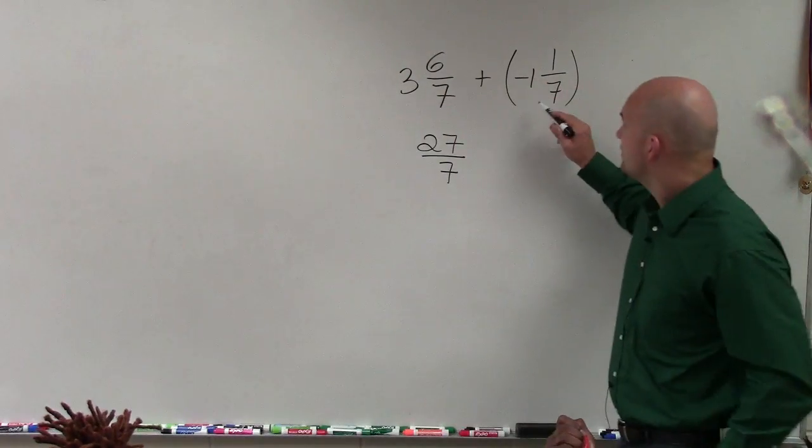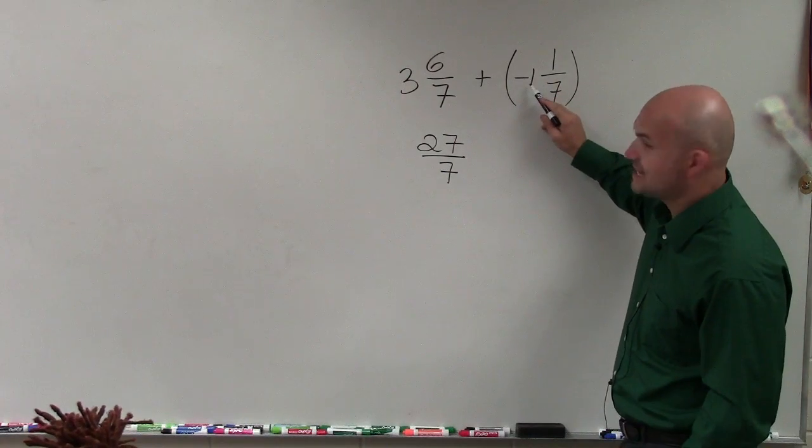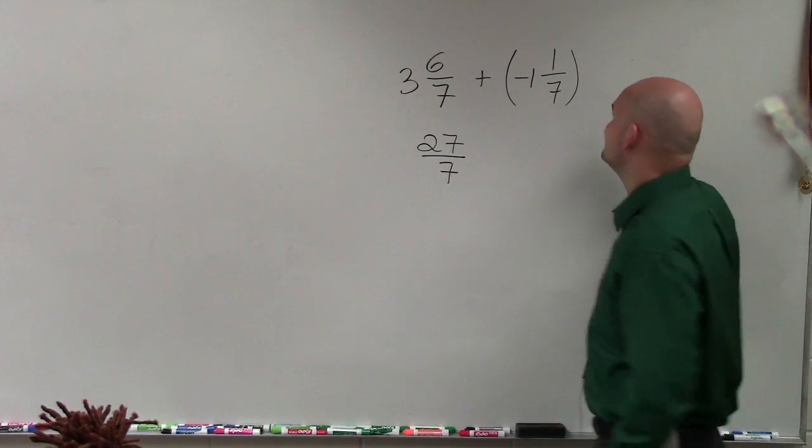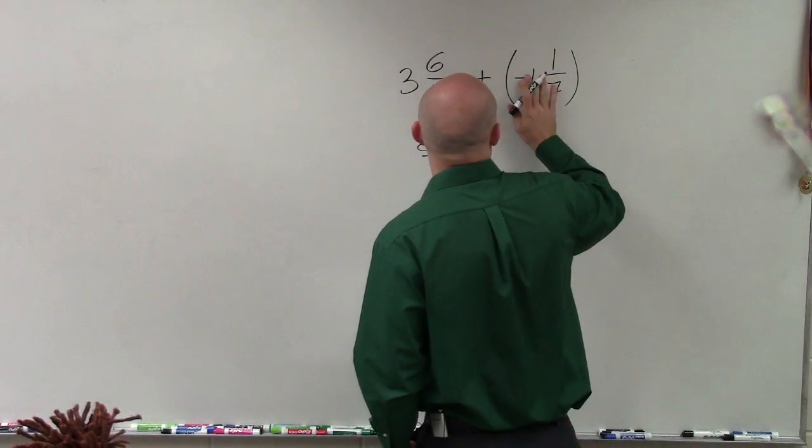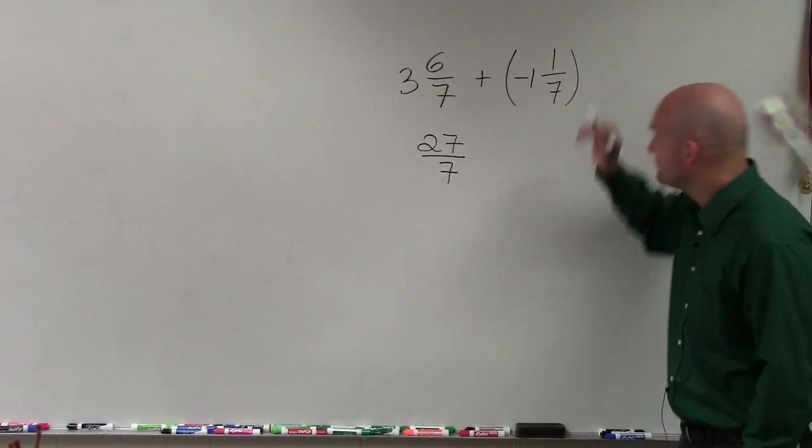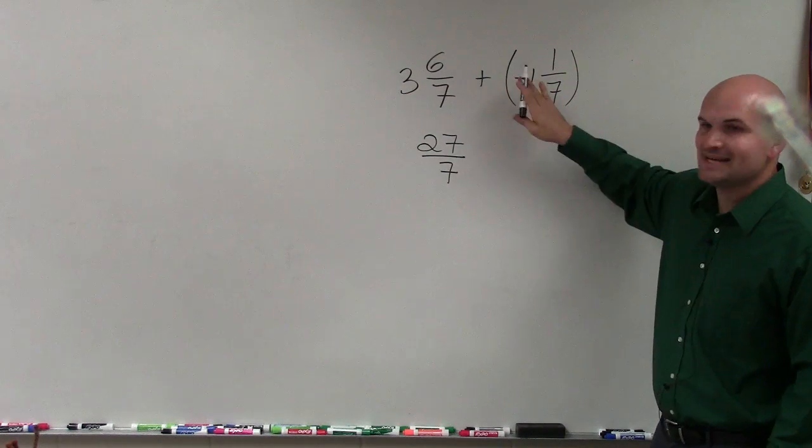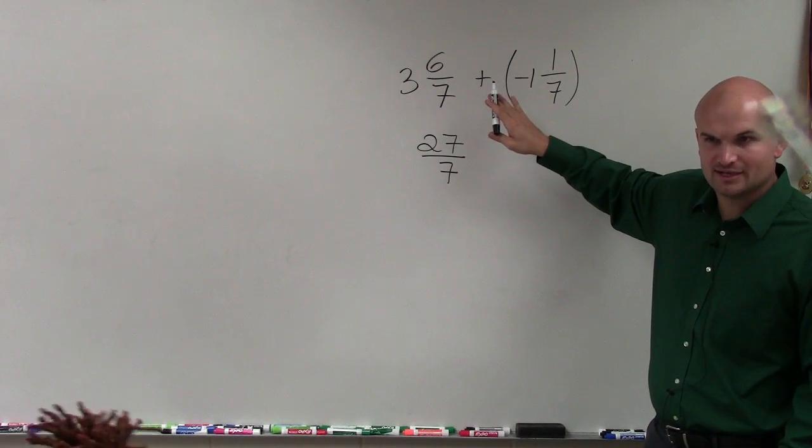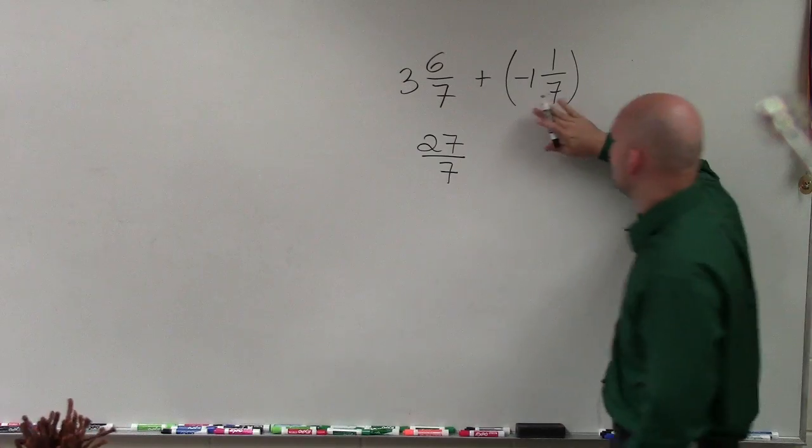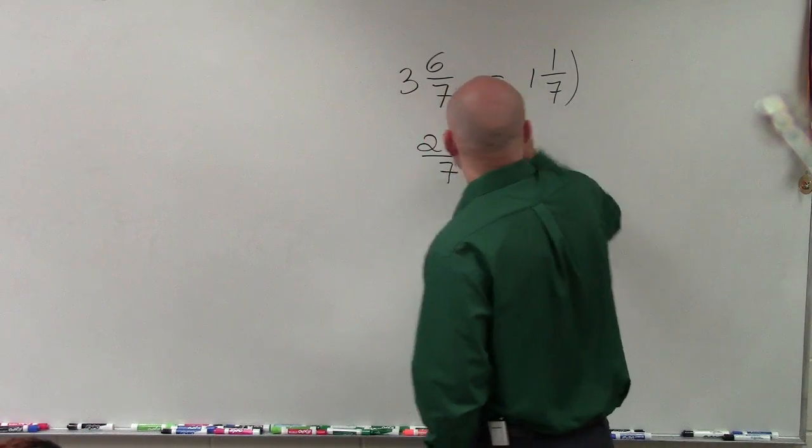Over here, I have 7 times negative 1, which is negative 7. First of all, plus a negative, right? Didn't we talk about how that's kind of like a subtraction problem? Yes, right, okay. So let's just rewrite this as a subtraction problem.